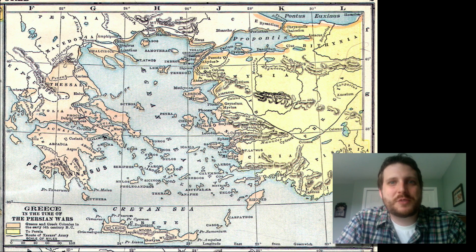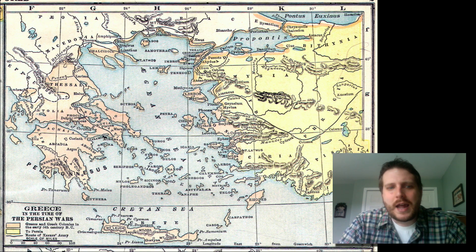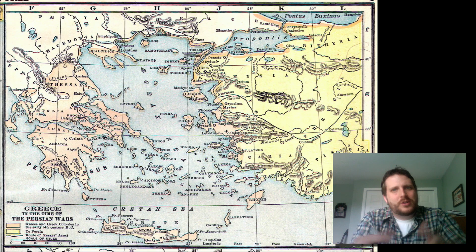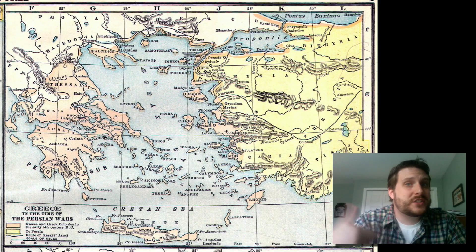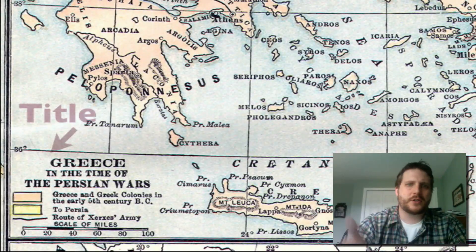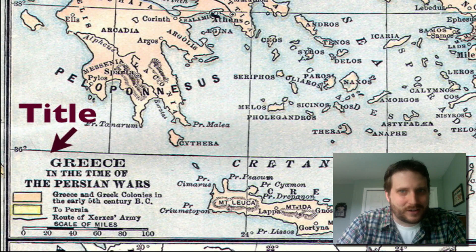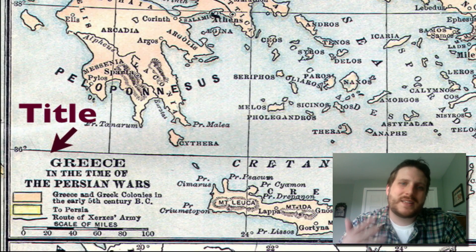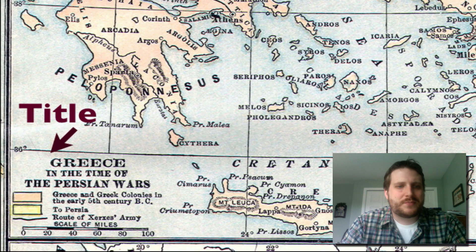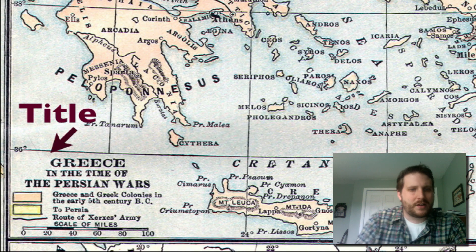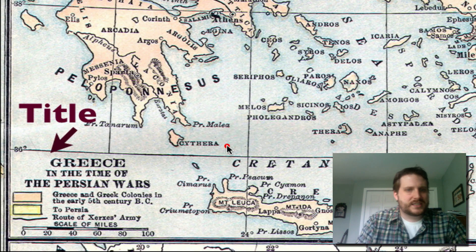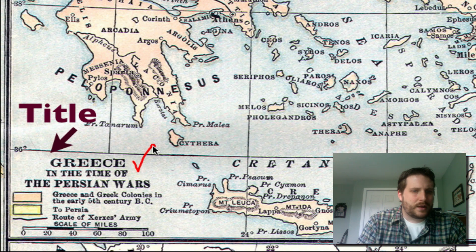This is a map of Greece, an area of the world we'll be studying this year. Before you start looking at a map, you should look at five different things. The first thing you should look at is the title — just like when reading a book. The title of this map is 'Greece in the Time of the Persian Wars,' so this is a map of Greece during a specific time period.